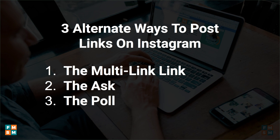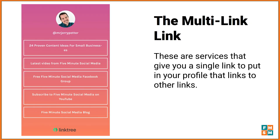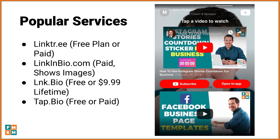The first one, the multi-link link, is by far the most popular. This has become very popular in the last year, year and a half. Essentially it involves using a tool which creates a small, mobile-optimized page that you can update whenever you want. The upside is you can link to a bunch of different places. The downside is it's not necessarily the best user experience because you're asking a user in your post or your story to go to your profile, then click the link, then figure out which of the other links they are looking for and click that. But it is a way to have one link on your profile that links to a lot of different places, and it's mobile friendly. On the screen here are some free options, and there are some paid options as well.